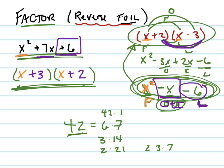But I have to put them there in such a way that the outside plus the inside equals that middle term right there. So was 3 and 2 correct? What's 3 times x? 3x. What's 2 times x? 2x. What's 3x plus 2x? 5x. And that's not what I want. I want 7x. So 3 and 2 wasn't right.